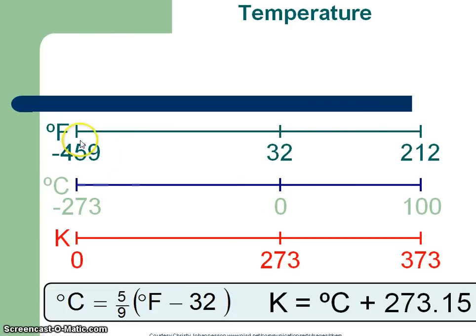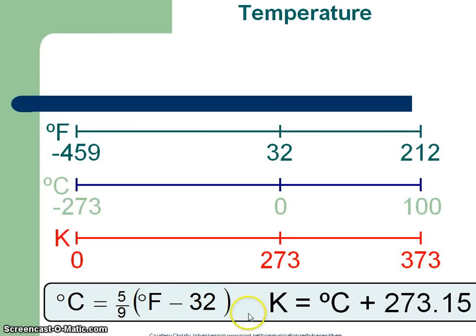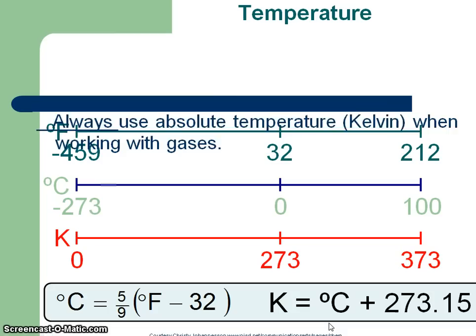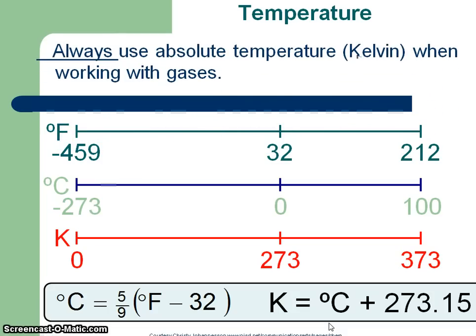This is just comparing the temperature scales so you remember what's going on. Zero Kelvin we haven't reached — we haven't reached negative 273 Celsius; we've come really close but we haven't reached it. This is a conversion from Fahrenheit to Celsius and from Celsius to Kelvin. This should be on the back of your periodic tables. Always use absolute temperature Kelvin when working with all gases.